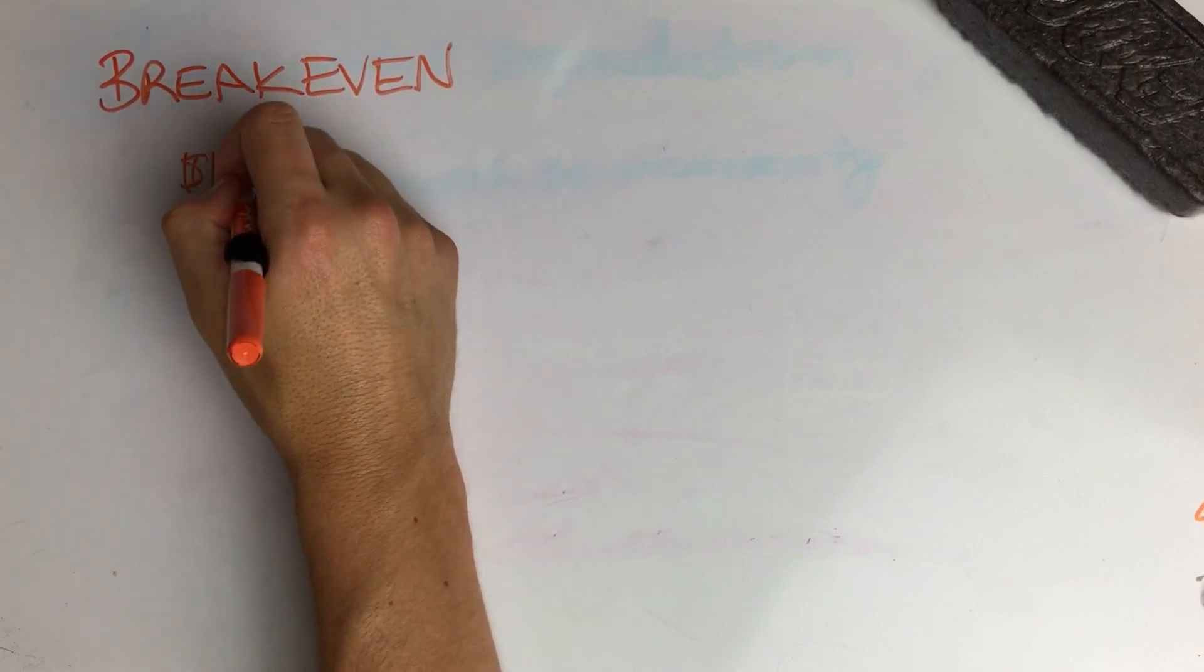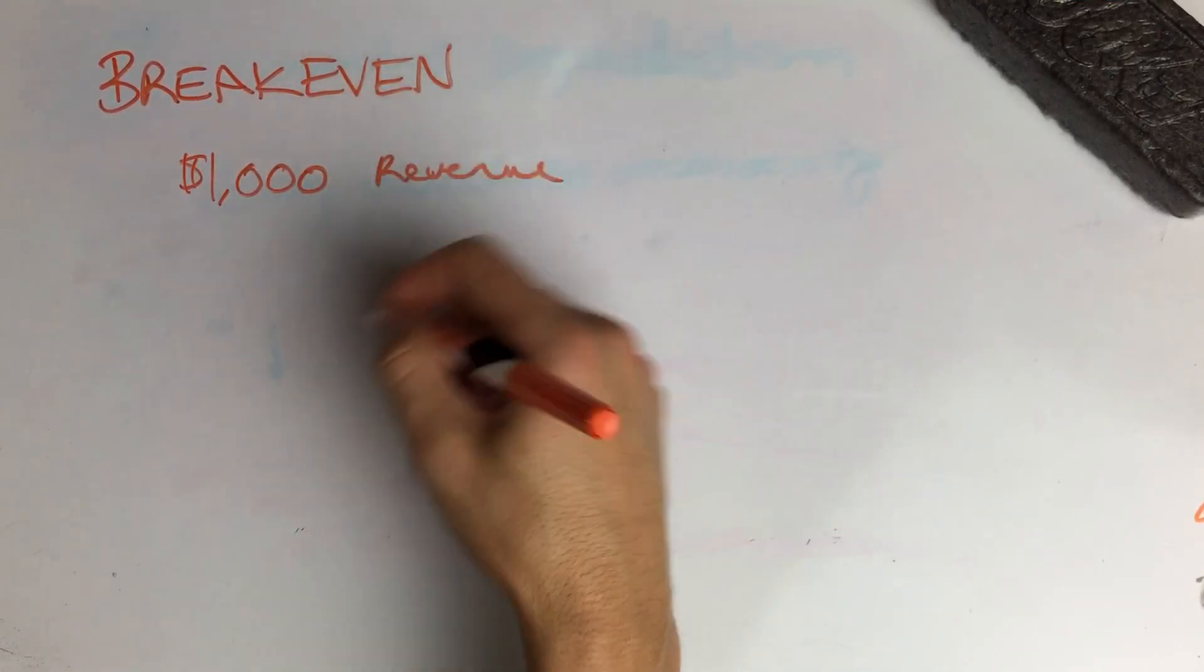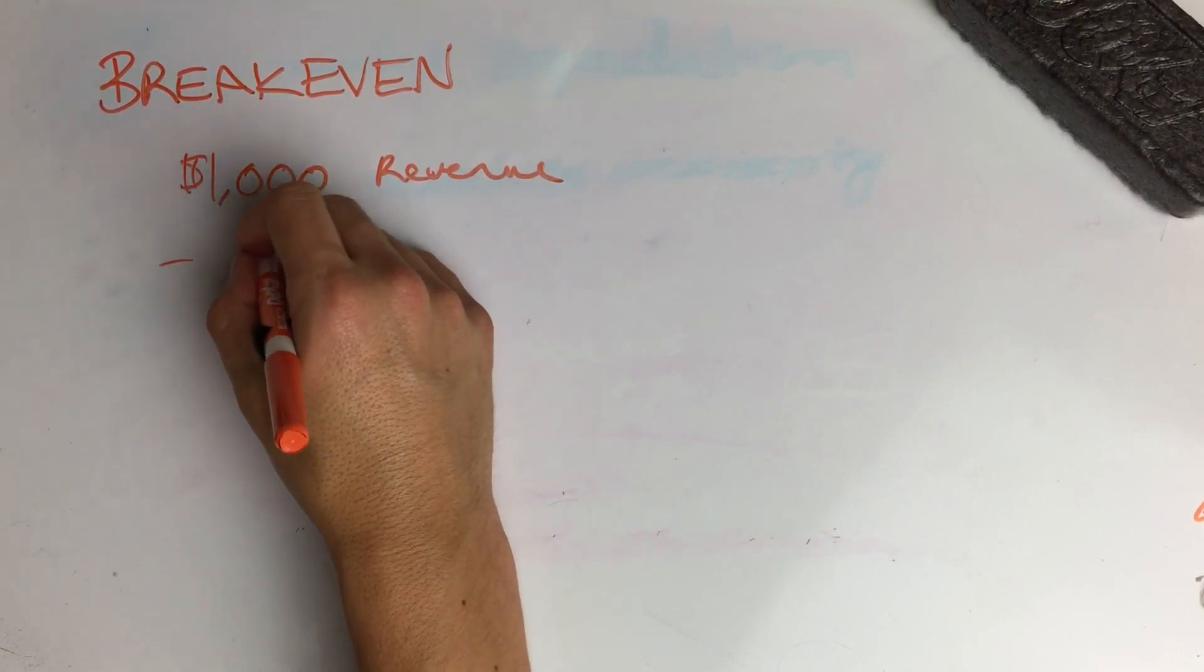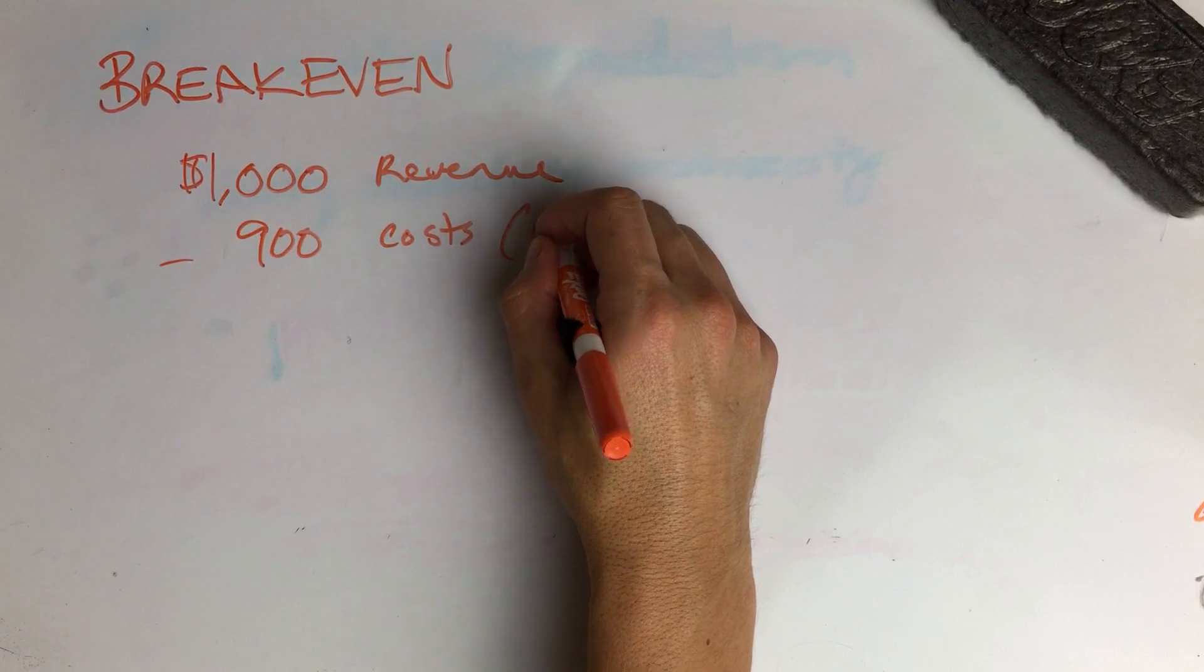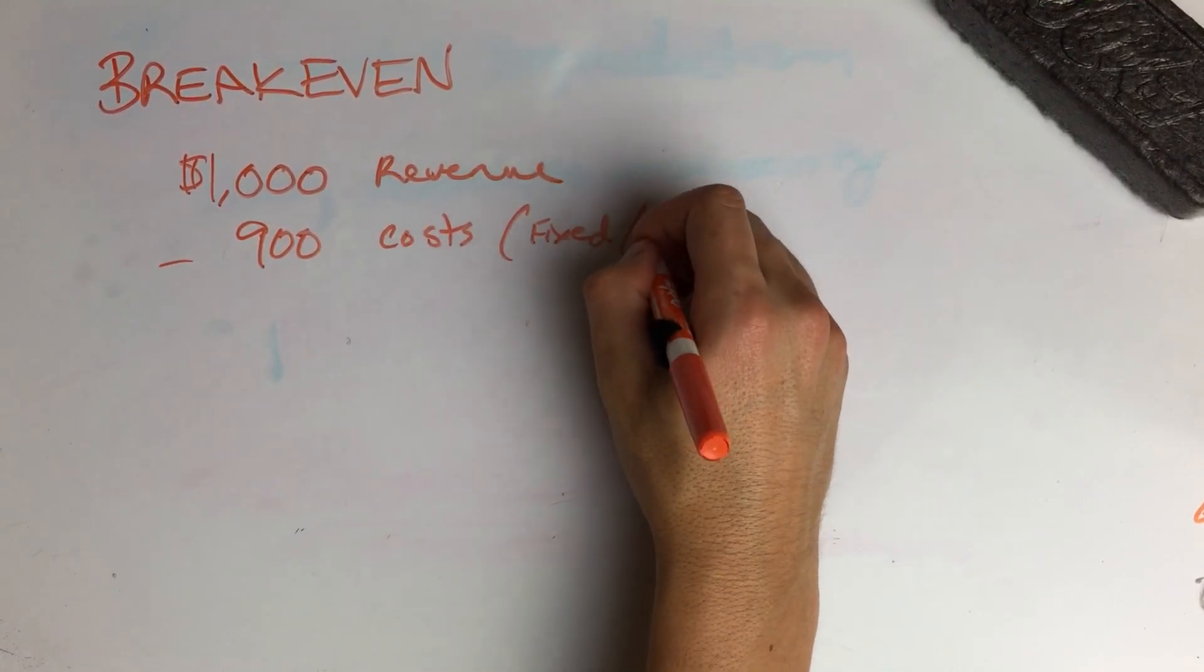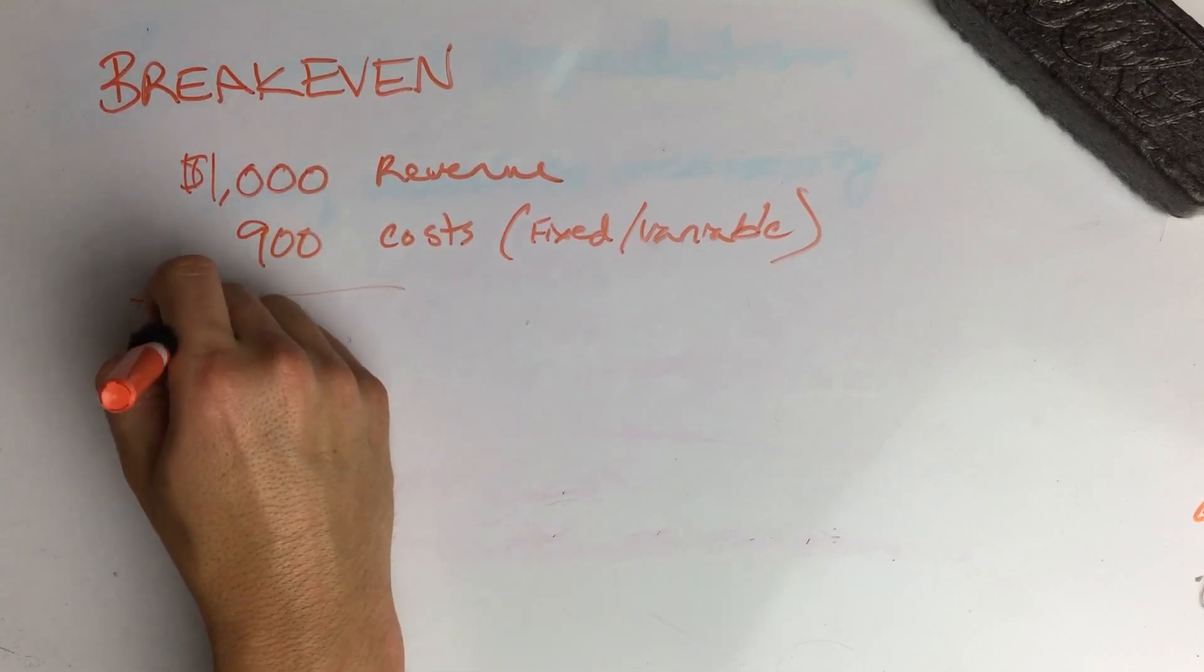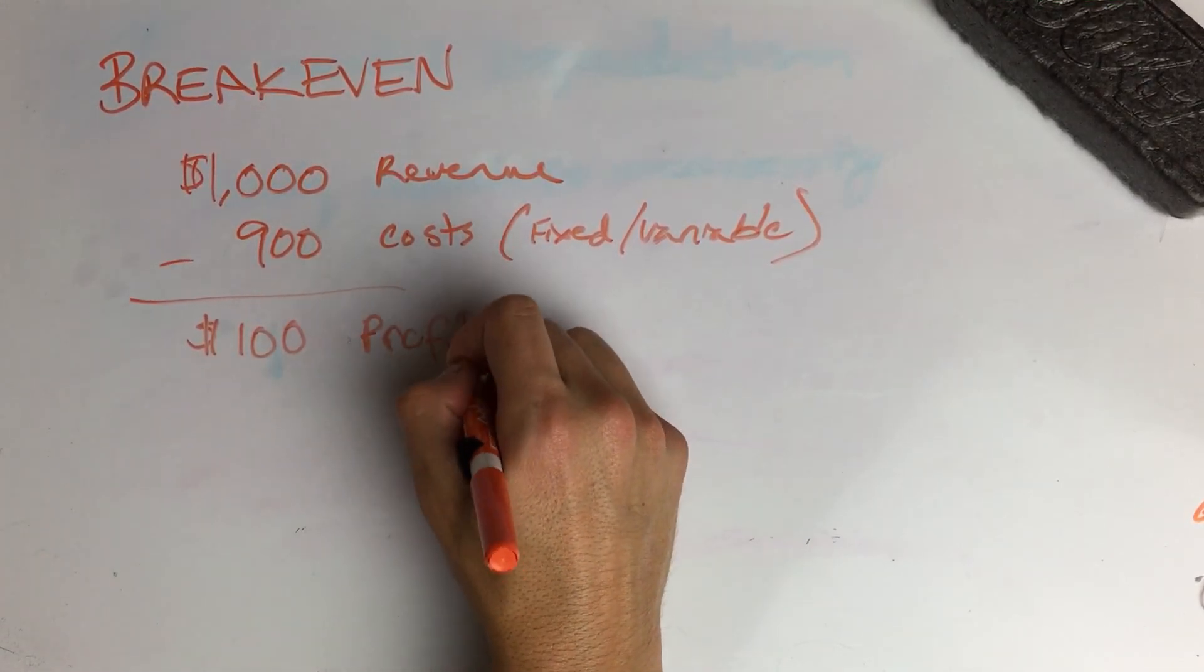That per month is making $1,000 of revenue. That's how much money you're putting in the cash register. But you're spending $900 in costs, fixed and variable. If you've seen that chapter, you know what that means. So that's $100 of profit coming in every month.